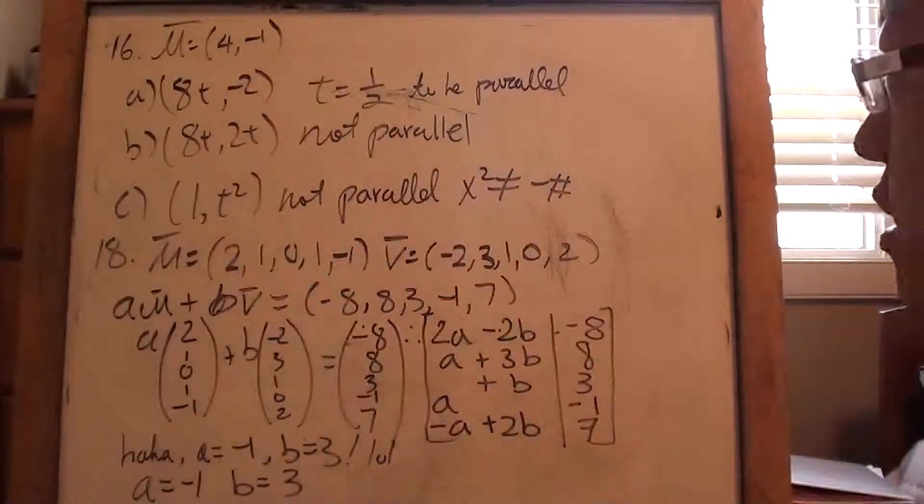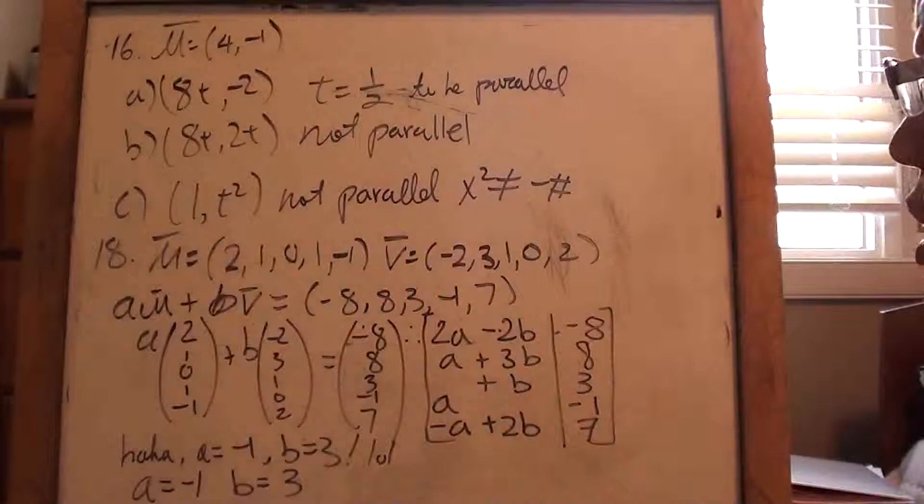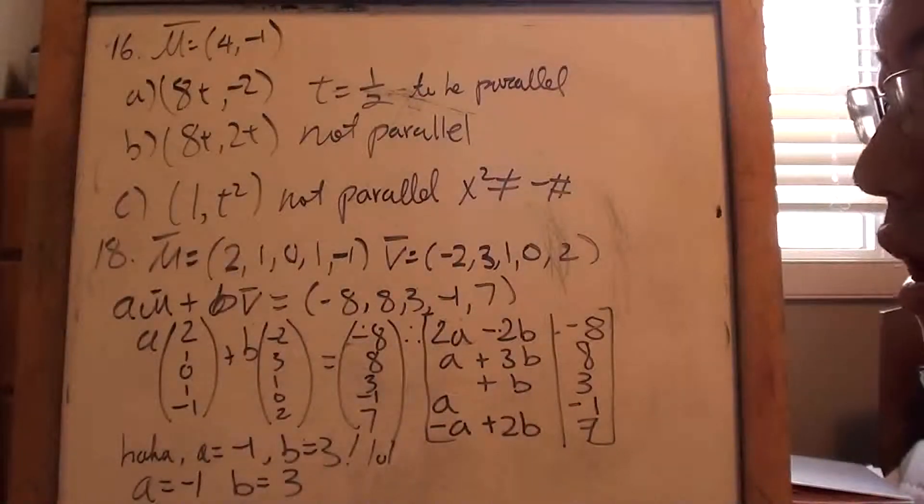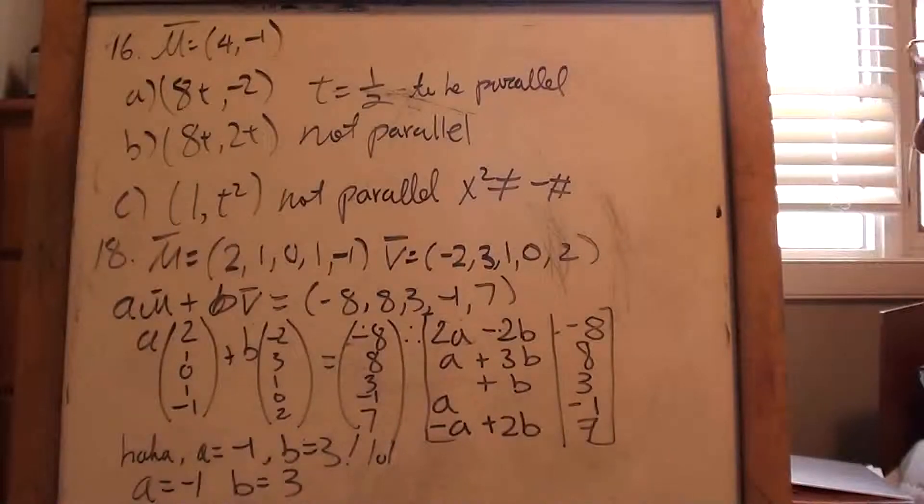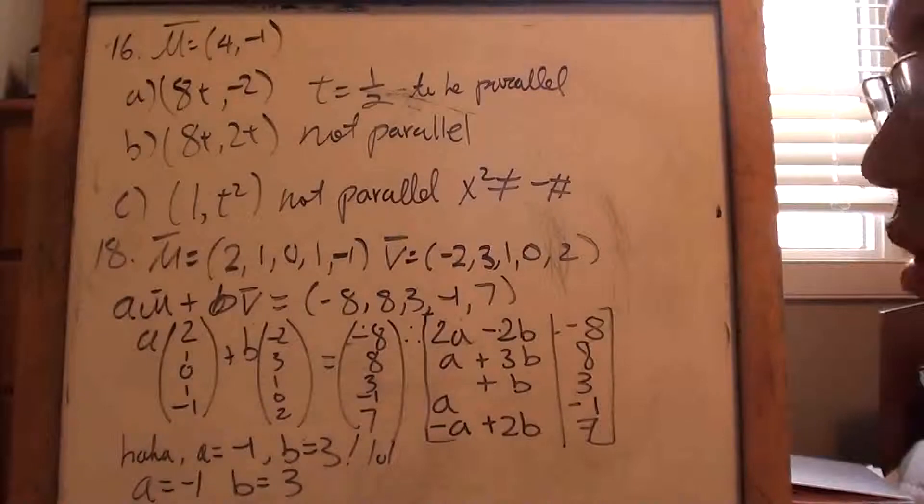Anyways, 16, so again, similar idea as 15, right? In order to be parallel, you have to have a scalar B that acts as a multiple for the original vector and the new vector. Two vectors to be parallel.